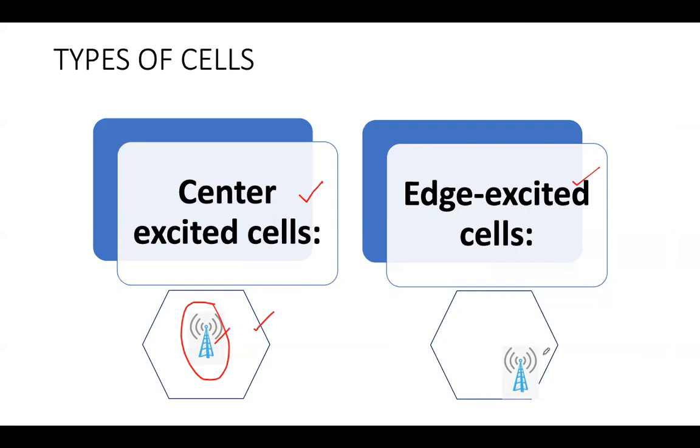Whereas in case of edge excited cell, the base station is located at the edge of the cell. Since it is located at the edge, we do not require an omnidirectional antenna. Rather, we require a sectored antenna which could cover the entire cell.